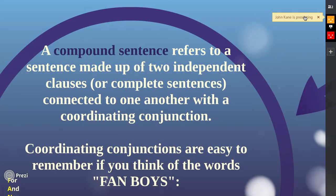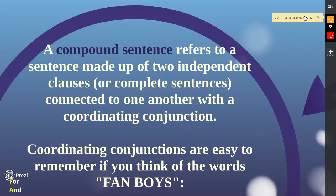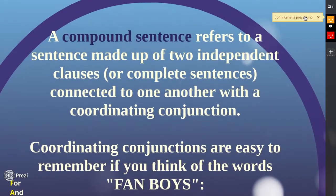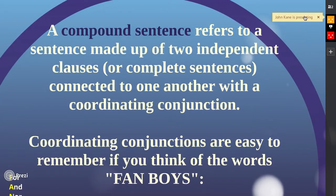A compound sentence refers to a sentence that's made up of two independent clauses — or two complete simple sentences — connected to one another with what's called a coordinating conjunction: and, or, so, but — those types of words.